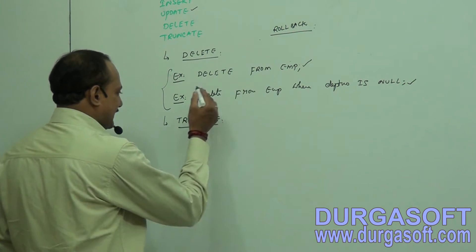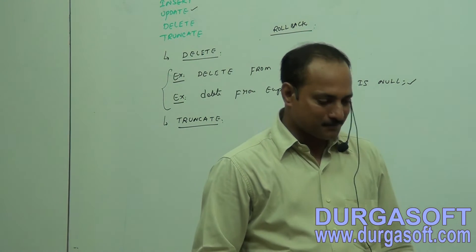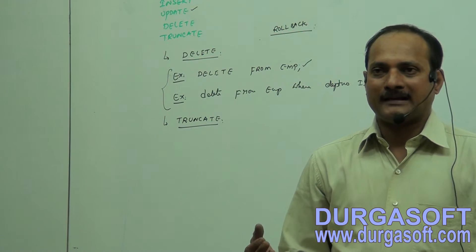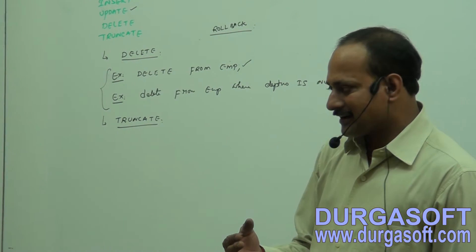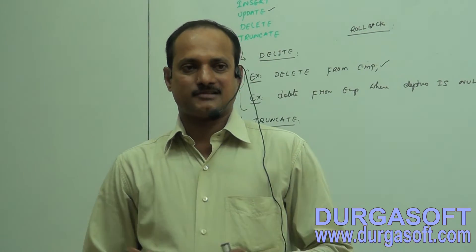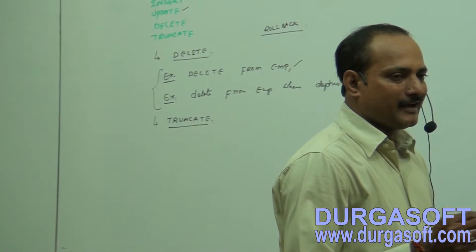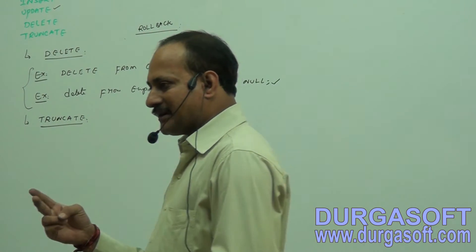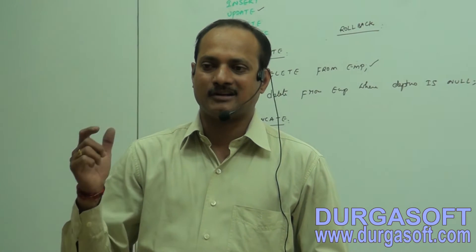So what is TRUNCATE? Let me explain with a sample scenario. Consider a banking domain where they maintain a customer details table. Up to yesterday they had 100 customers. Today, two new customers opened accounts, so two new records are added to the table.